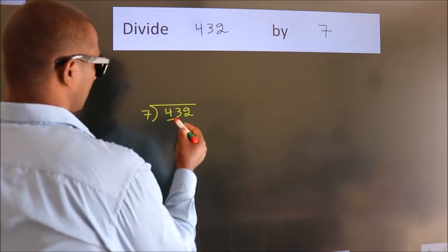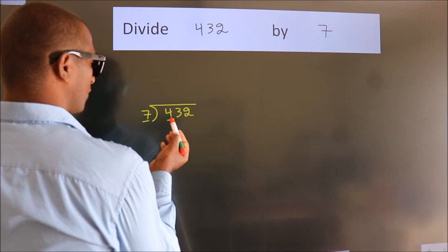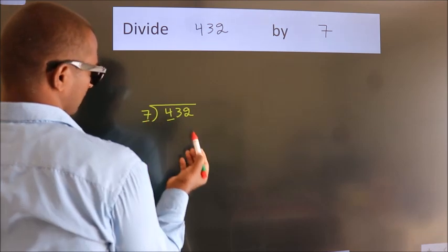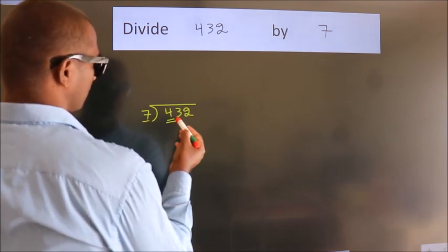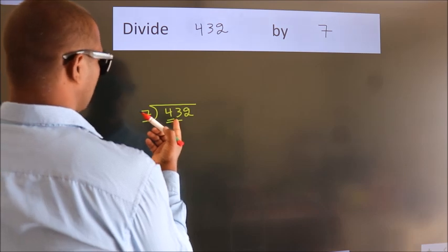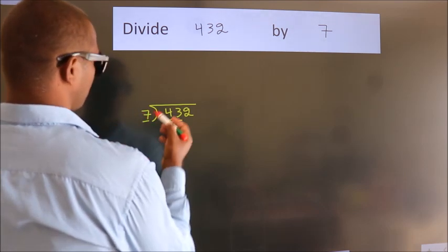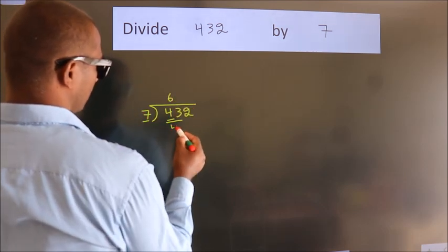Next, here we have 4, here 7. 4 is smaller than 7, so we should take two numbers, 43. A number close to 43 in the 7 table is 7 times 6, which is 42.